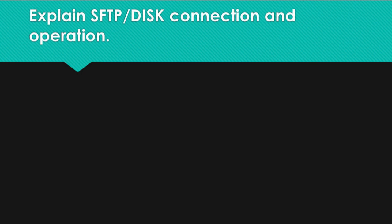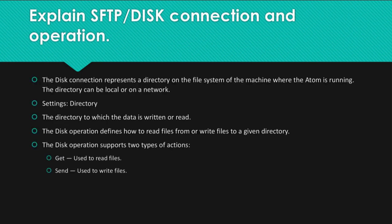Question: Explain SFTP/Disk connection and operation. Answer: The disk connection represents a directory on the file system of the machine where the atom is running. The directory can be local or on a network. Settings: Directory — the directory to which the data is written or read. The disk operation defines how to read files from or write files to a given directory, supporting two types of actions: Get (use to read files) and Send (use to write files).